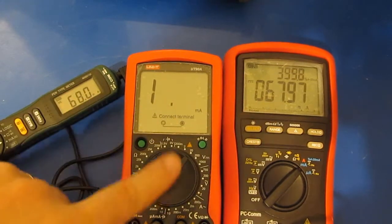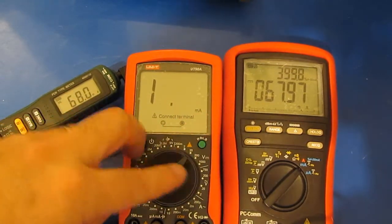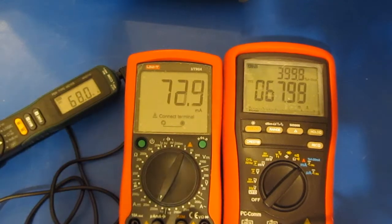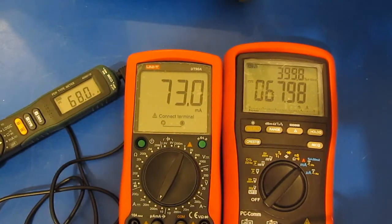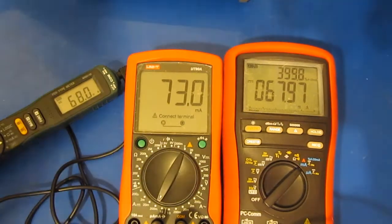See I'm outputting roughly 68 milliamps now. Of course the UT90A is a manual ranging meter. Again for all this meter has been through not too bad.